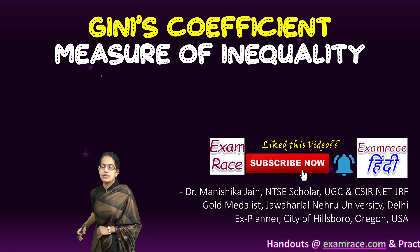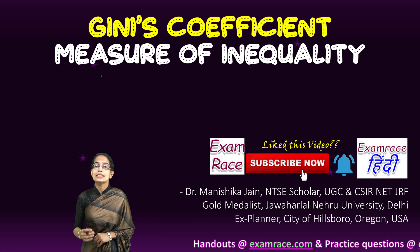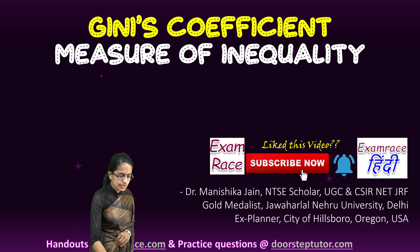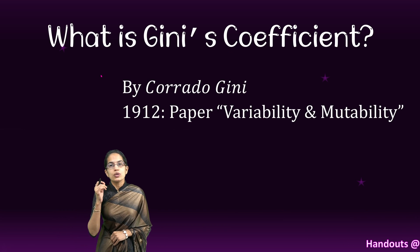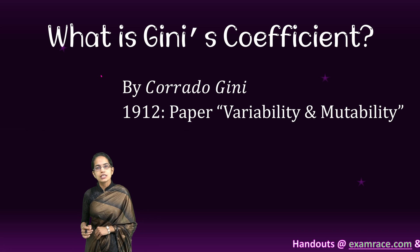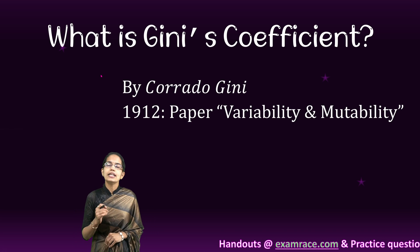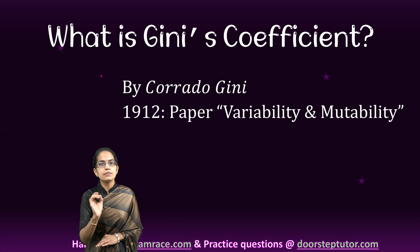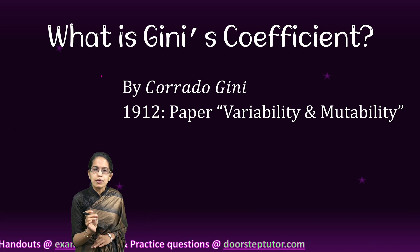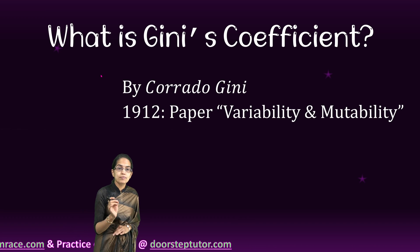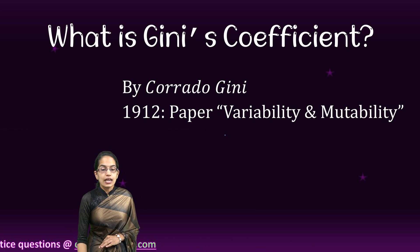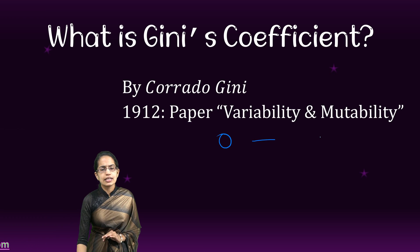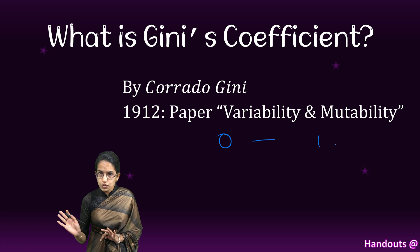We have a very simple measurement which is known as the Gini coefficient, which is a measure of understanding this inequality. The Gini coefficient was first given by Corrado Gini in 1912 when he wrote his paper 'Variability and Mutability.' Under this paper he was trying to explain that if inequalities or equalities are there, the value of the Gini coefficient would vary.